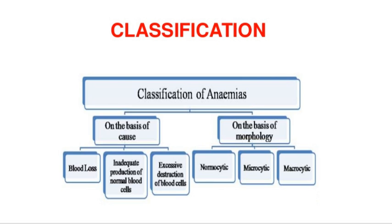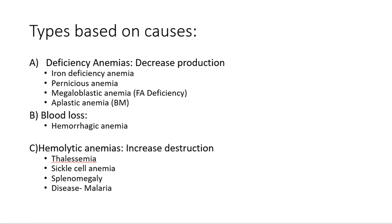Anemias can be divided by two aspects: one depending on cause and one depending on morphology. Depending on cause, anemia can be due to blood loss, inadequate production of RBCs, or excessive destruction of cells. On the basis of morphology, anemia can be normocytic, microcytic, and macrocytic.